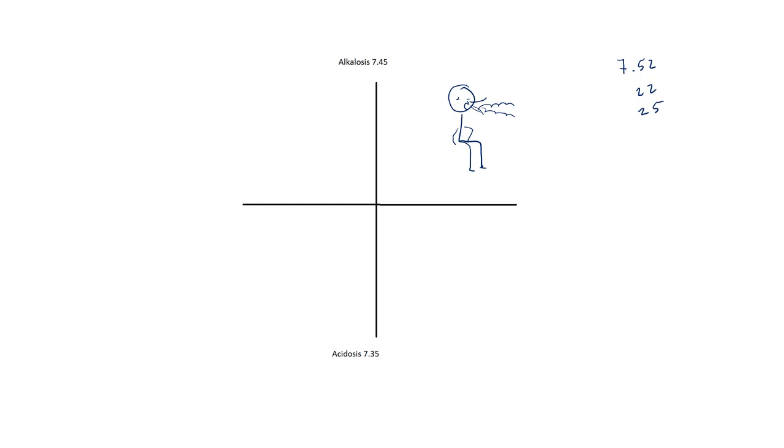The next number we're going to work on is 7.20. So we've got a pH of 7.20, a CO2 of 68, and a bicarb of 24. We know immediately this is acidosis because of our low pH, and then which number is out of range? It's our CO2. So we know that this is respiratory acidosis. This is our friend who was out drinking and partying and had way too many drugs, and now they're minimally responsive and not really breathing—they're hypoventilating.